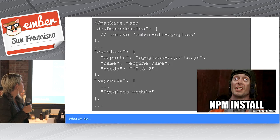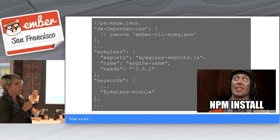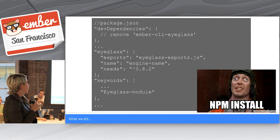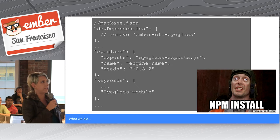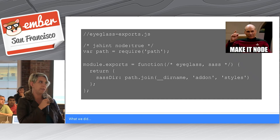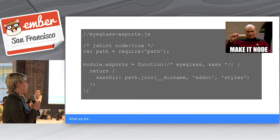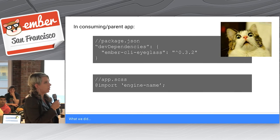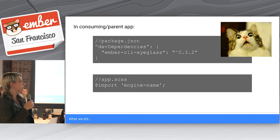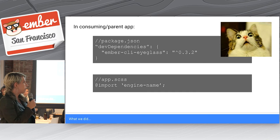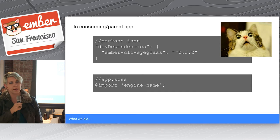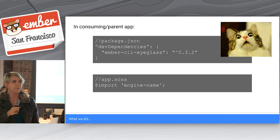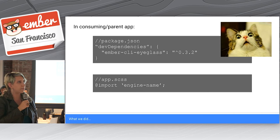So how did we get through this? We modified our package.json. We removed the Ember dependency entirely, and then wrote an eyeglass exports.js file to tell eyeglass where to look in the add-on directory for styles instead of app. And then we modified our consuming app's package.json to bring in, and then they just import our styles as you would any other add-on SCSS.